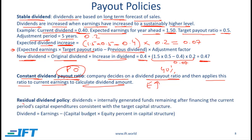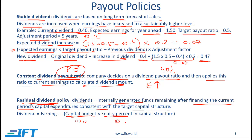With the residual dividend policy, dividends are equal to the internally generated funds remaining after financing the current period's capital expenditures consistent with the target capital structure. Let's say that the capital budget of a company is 100 million, the equity percent in the capital structure is 80%, or 0.8, and the earnings in a given period are 120.